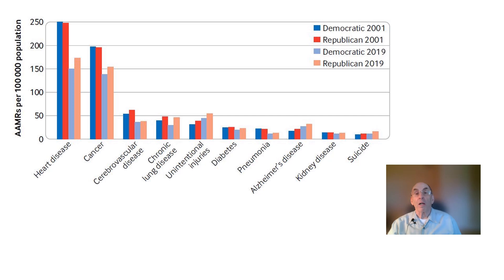This figure shows the results of the study broken out by specific causes of death. For all illness-related causes of death except Alzheimer's disease, there were decreases in age-adjusted mortality, reflecting advances in medical practice between 2001 and 2019. Except for strokes, decreases in cerebrovascular disease were greater in blue counties than in red counties. Two categories showed increases in mortality between 2001 and 2019: unintentional injuries, which includes accidental drug overdoses, and suicides. For both these categories, the increases were larger in red counties than in blue counties.